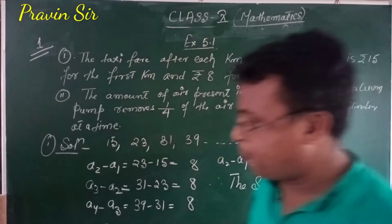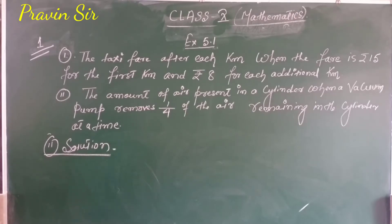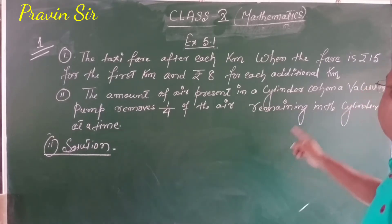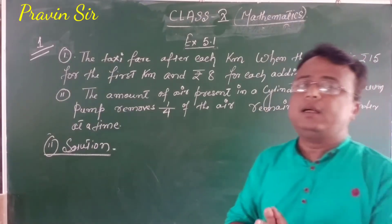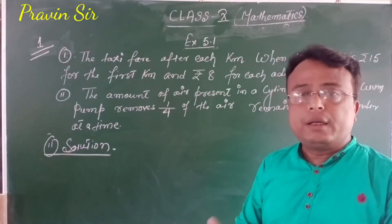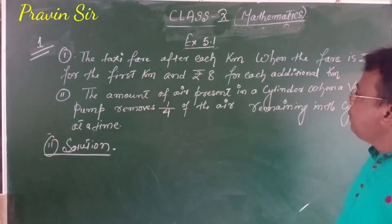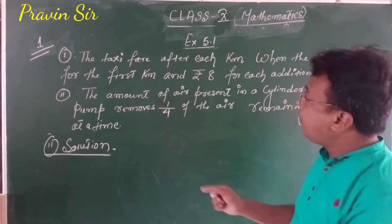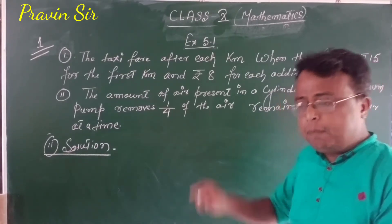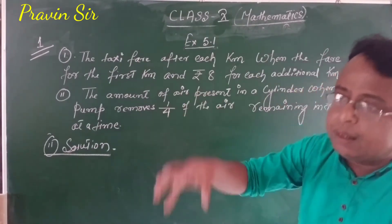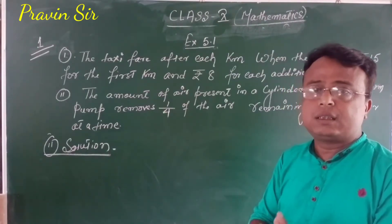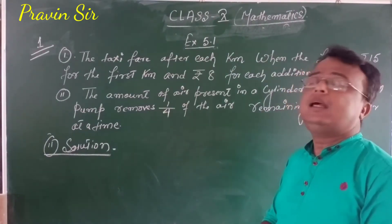Question two: The amount of air present in a cylinder when a vacuum pump removes one fourth of the air remaining in the cylinder each time. In a cylinder some amount of air is there. Every time the vacuum pump removes one fourth of the air present in the cylinder. We have to convert that situation into a series and check whether it is in AP or not.